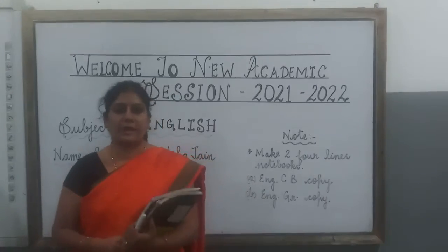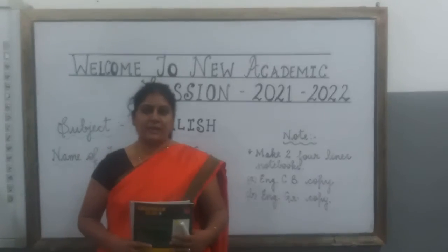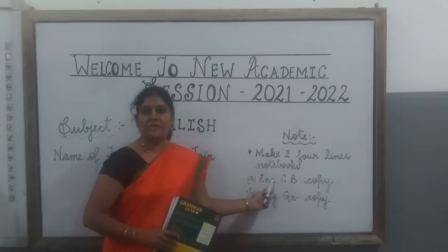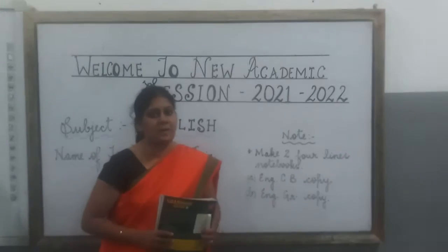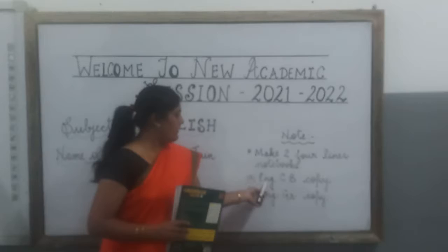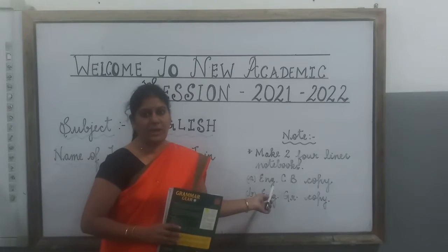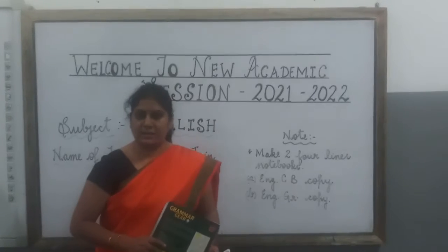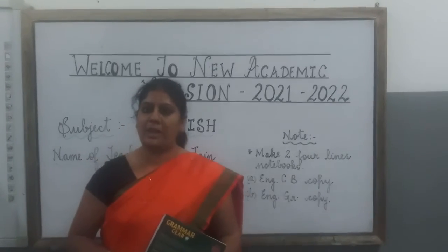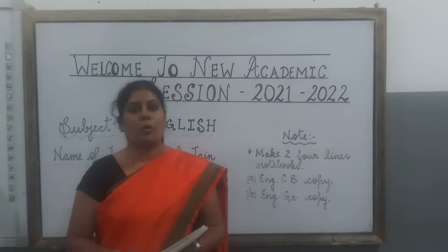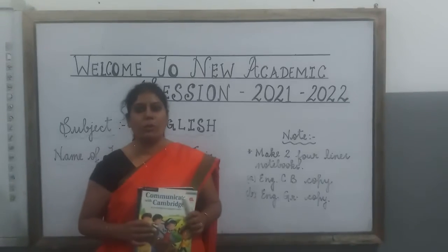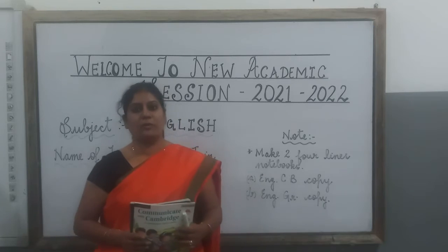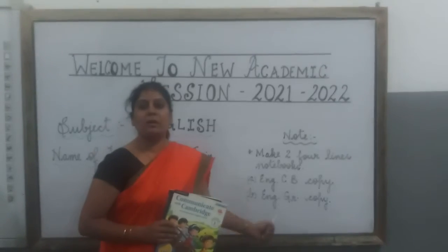For the English subject you have to make two full-lines notebooks. One is the English course book copy — CD means course book — and the other is the English grammar copy. Course book work you will do in the English CD notebook and grammar book work you will do in the grammar copy.